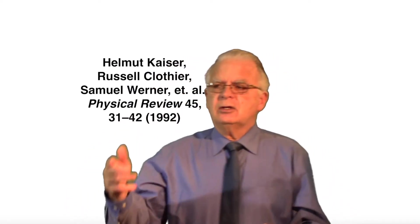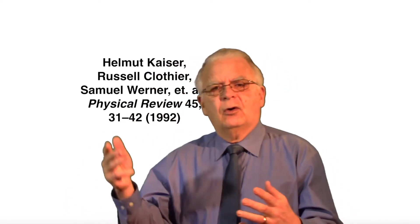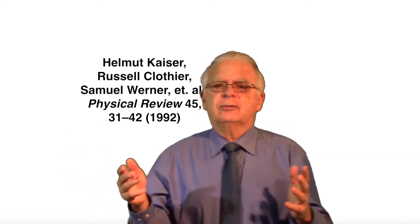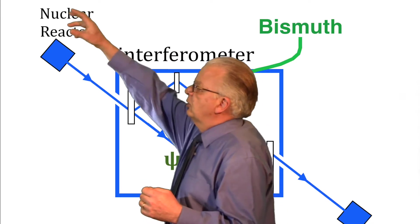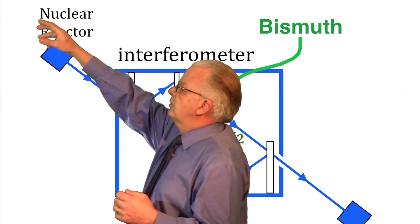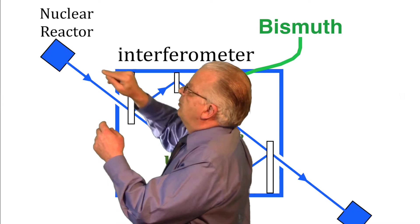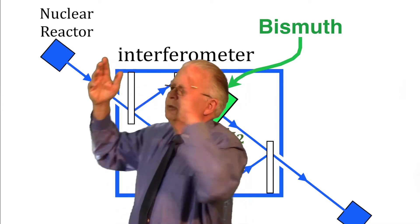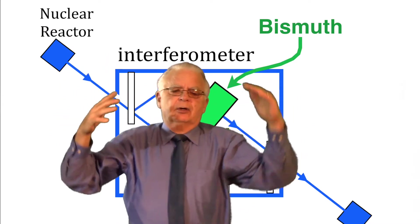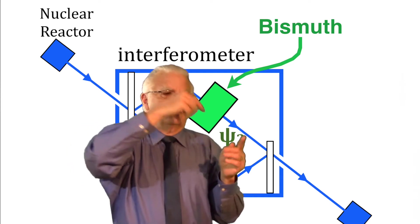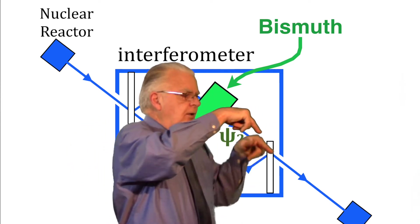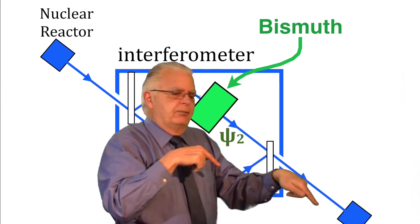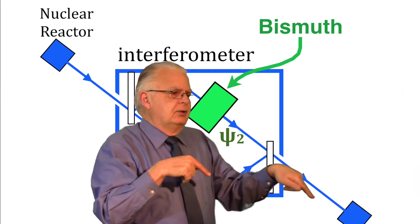The easiest way to get started is to discuss an experiment that was published in 1992 by Kaiser et al, a neutron interferometer experiment. They took a neutron source up here, in this case a nuclear reactor, and the neutrons came down this blue line here into an interferometer where they split into two streams and then recombined and left the interferometer and are detected down here by a detector.